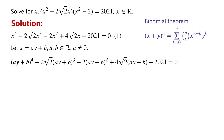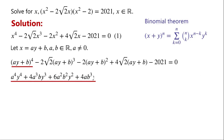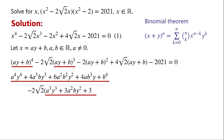We know that (x + y)^n equals the sum from k=0 to n of (n choose k) times x^(n−k) times y^k. By applying the binomial theorem, (ay + b)^4 equals a^4·y^4 + 4a³b·y³ + 6a²b²·y² + 4ab³·y + b^4. And (ay + b)^3 equals a³y³ + 3a²b·y² + 3ab²·y + b³.